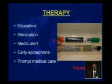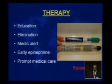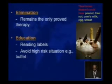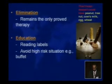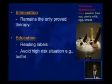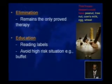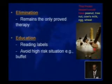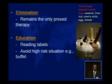Therapy of food allergy includes education of the patient, elimination of the allergen, medical alert, early epinephrine use, and prompt medical care. Epinephrine is used for life-threatening reactions. Elimination remains the only approved therapy so far. Education is very important — patients should recognize symptoms after accidental exposure, know how to read food labels, and avoid high-risk situations like open buffets. For example, ice cream can contain peanut, tree nut, cow milk, egg, and wheat — essentially every major allergen.